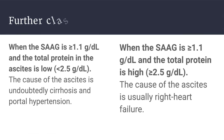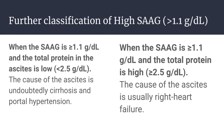Further classification of high SAG: when SAG is more than or equal to 1.1 gram per deciliter and total protein in the ascites is less than 2.5 gram per deciliter, the cause is undoubtedly cirrhosis and portal hypertension. When SAG is more than or equal to 1.1 gram per deciliter and total protein is more than or equal to 2.5 gram per deciliter, the cause is usually right heart failure.